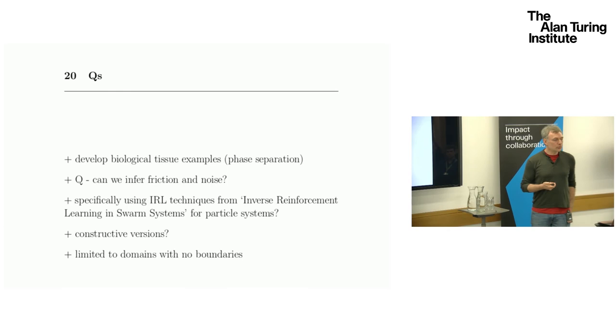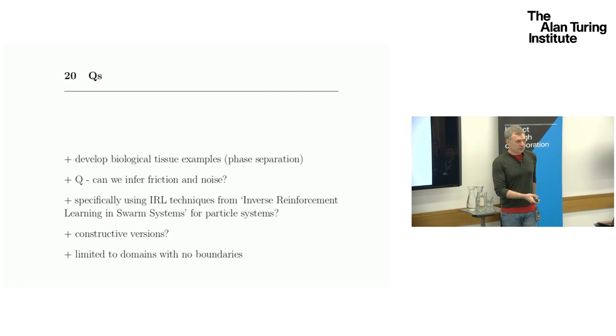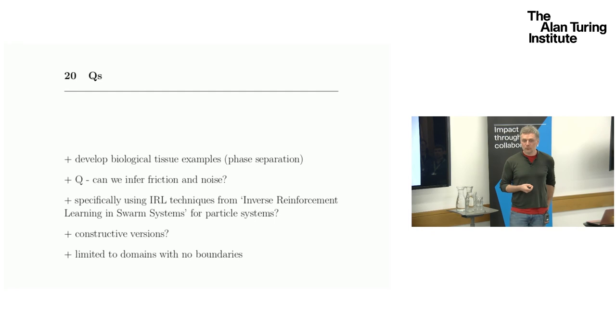I'm going to conclude with a bunch of questions, I think. Biological tissue examples would be an interesting playground. There's lots of questions, lots of experiments. We are talking about biological data earlier. Another question is obvious here in the palace of data science: can we infer friction and noise from actual trajectories, for example? Can we develop these kind of techniques?